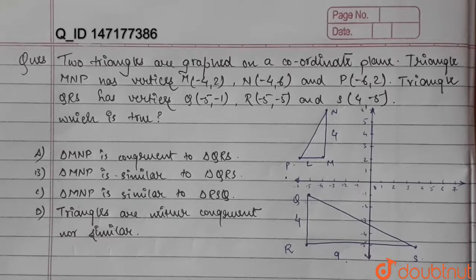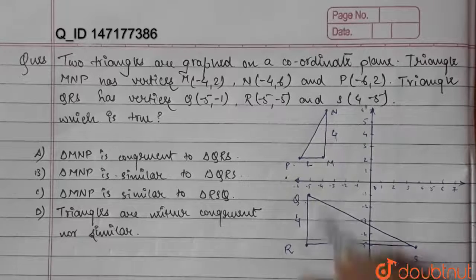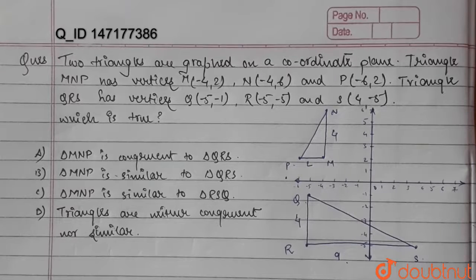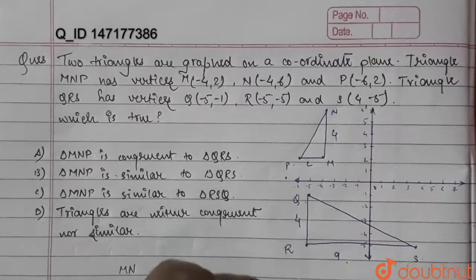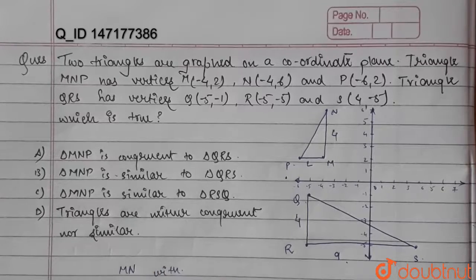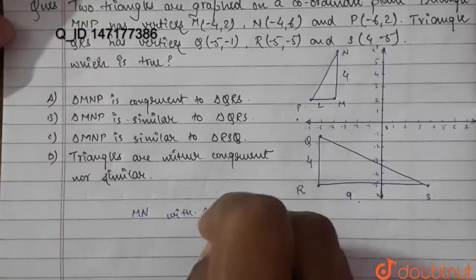In order to prove that these two triangles are similar or congruent, we need to check whether they are on the same ratio or not. As they are both right-angled triangles, we can compare MN with QR.